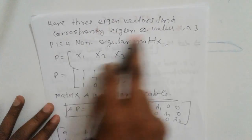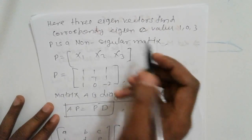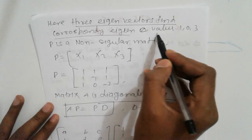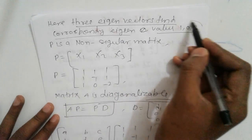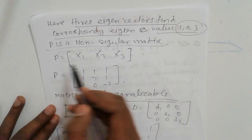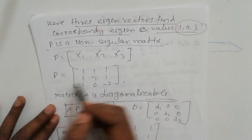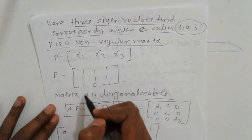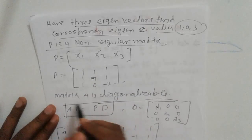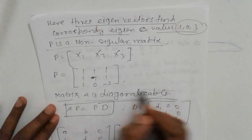Three eigenvectors corresponding to eigenvalues 1, 0, 3. P is the non-singular matrix P = [x1, x2, x3]. Write down this as P with entry minus 1. So matrix A is diagonalizable, and AP = PD.